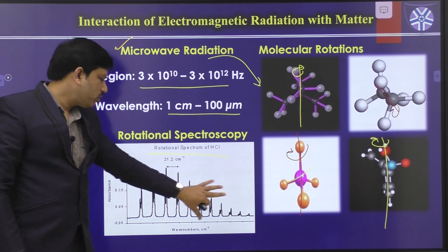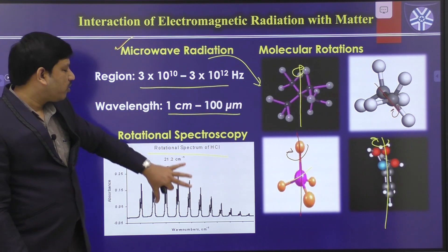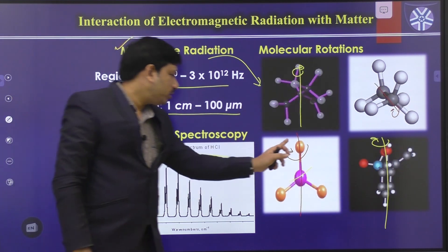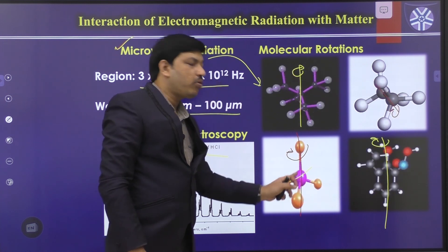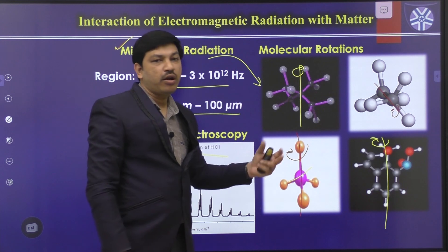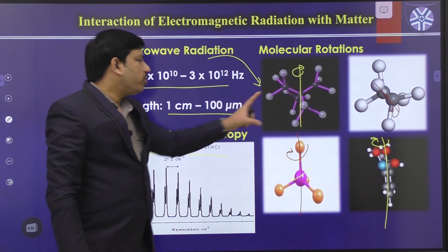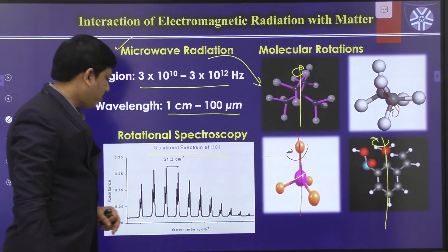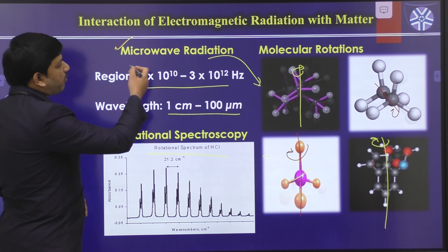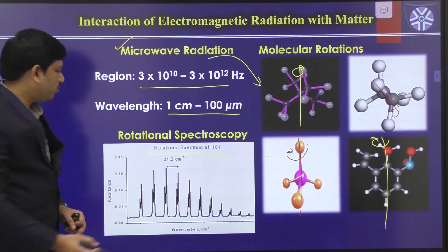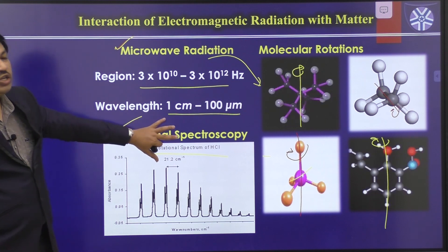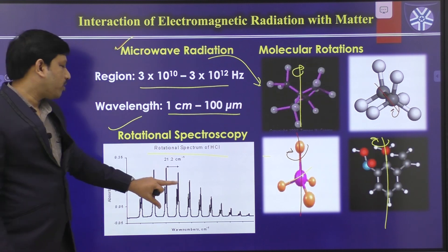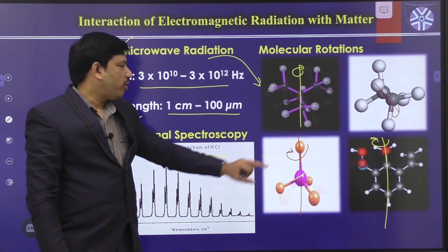From the rotation spectrum, we can understand the nature of the bonds in the molecule — for example, whether a bond is a C-C single bond or double bond, or whether it is a polar or non-polar bond. So if microwave radiation is provided toward an unknown molecule, rotation spectroscopy gives us a corresponding rotation spectrum, which provides information about the different types of bonds in the molecule.